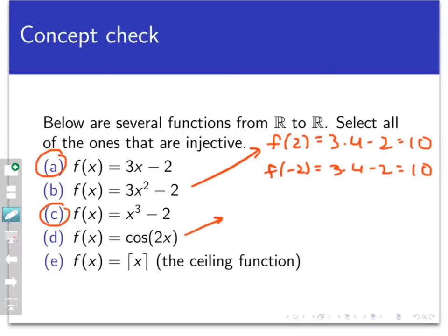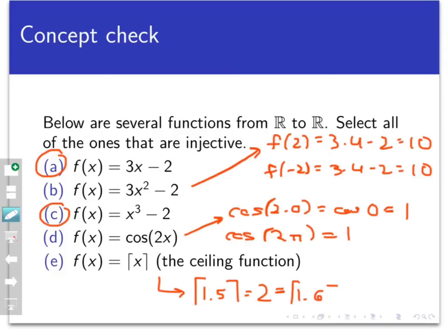Similar things happen to the functions in D and E. With this cosine function, we could choose x equals 0 and x equals 2 pi, for example, and those two different points both map to the same point 1 in the codomain. With the ceiling function, we have lots of collisions. We could choose, for example, x equals 1.5 and x equals 1.6, and both of those, although they are different, would map to 2.